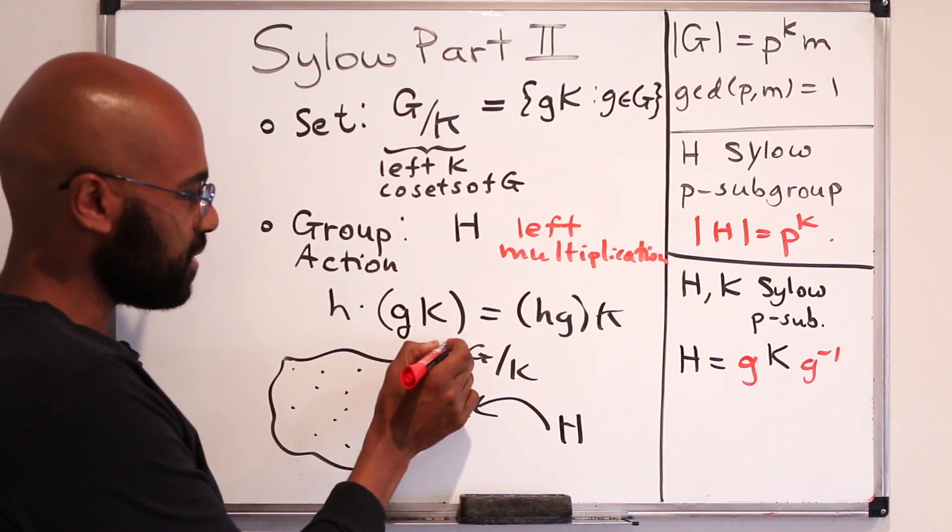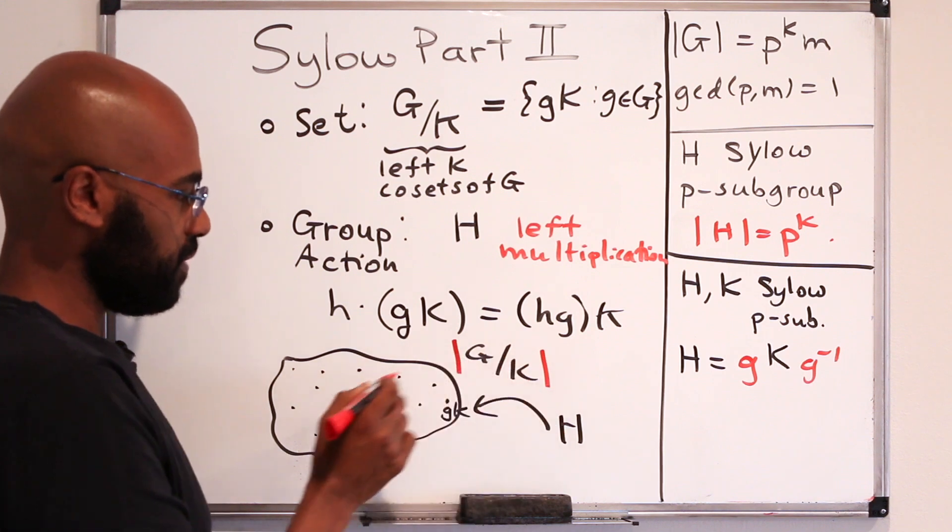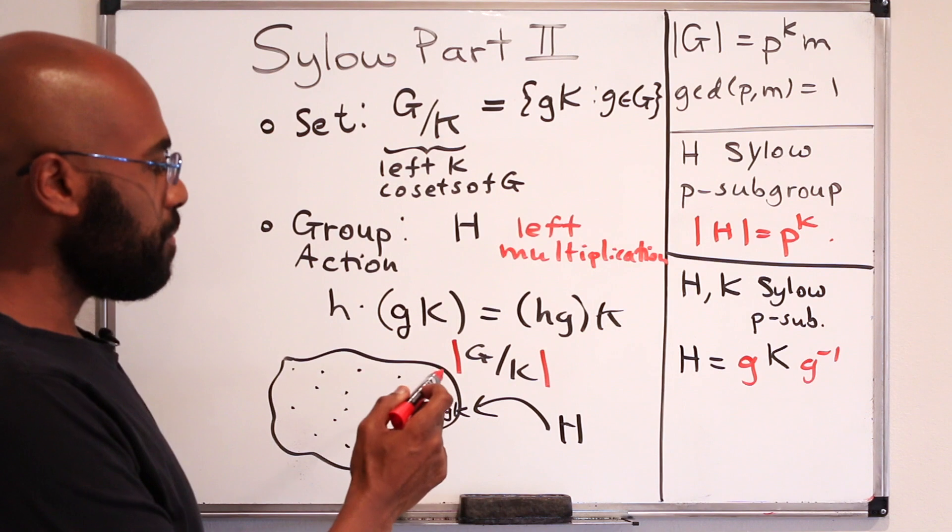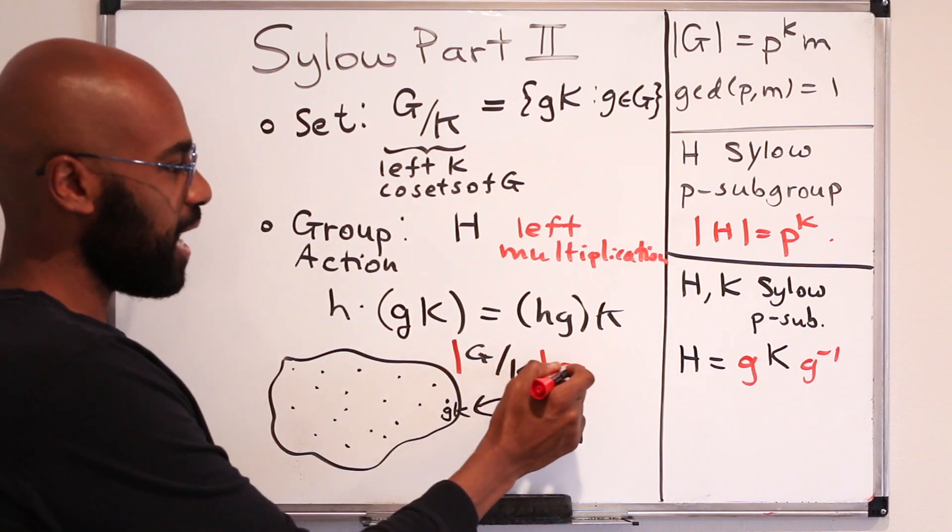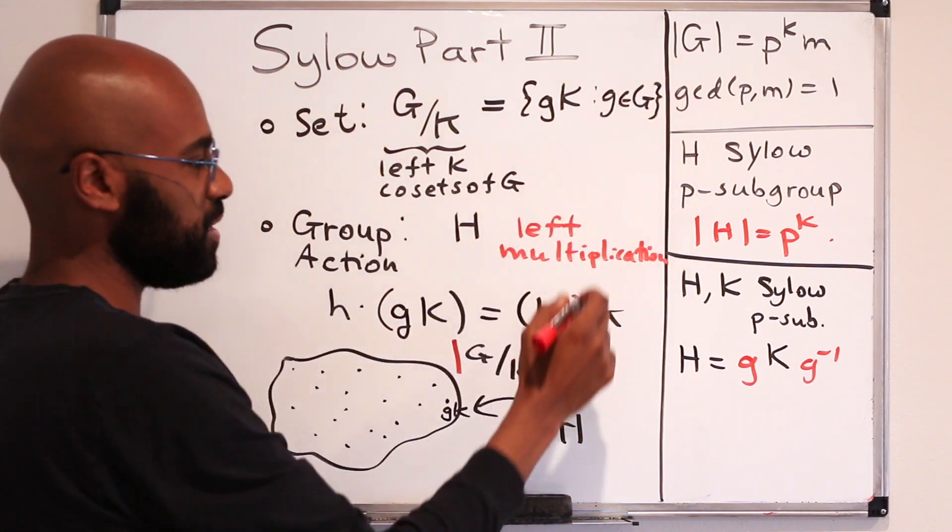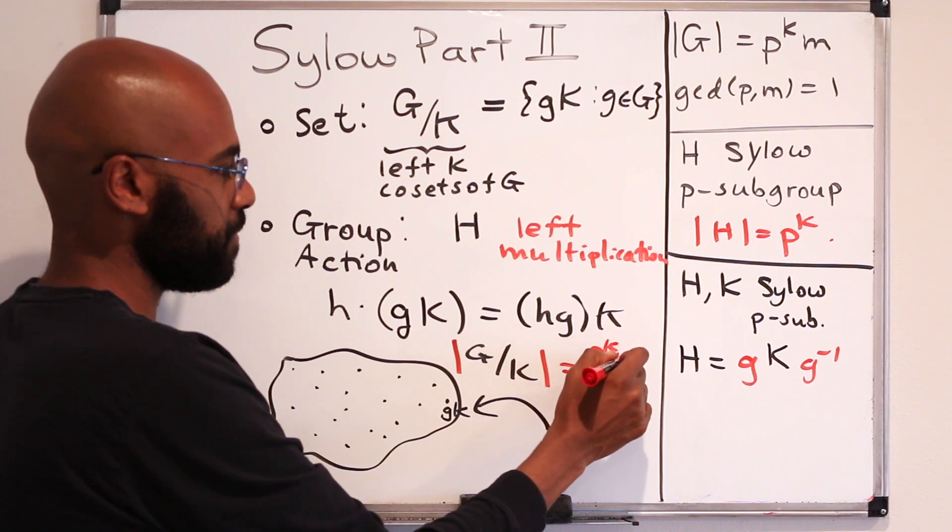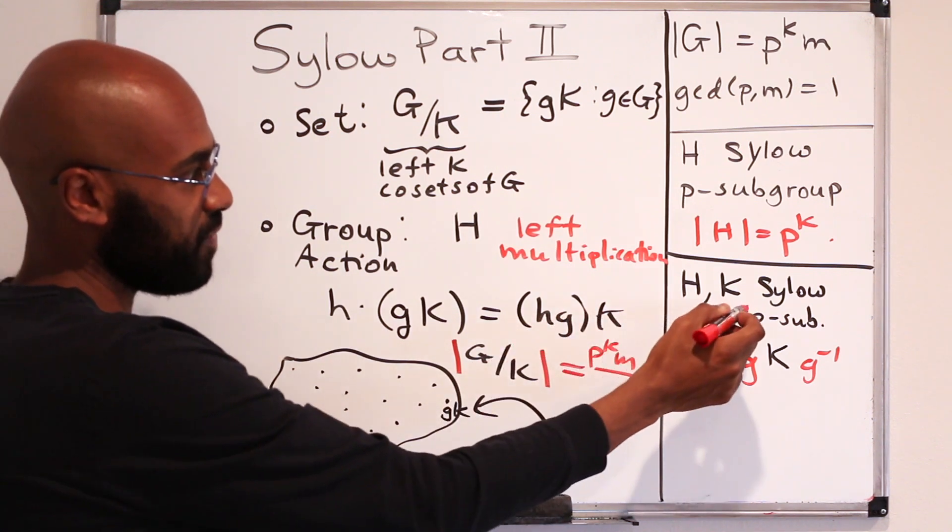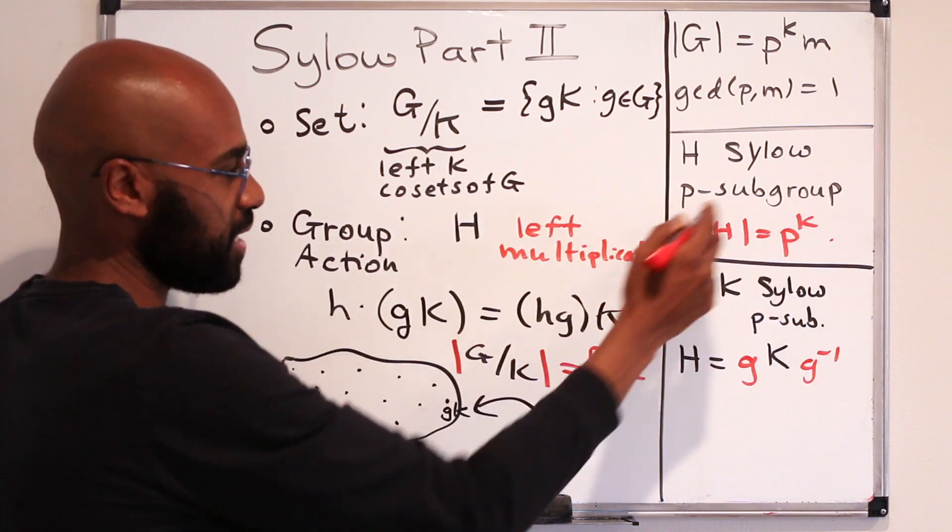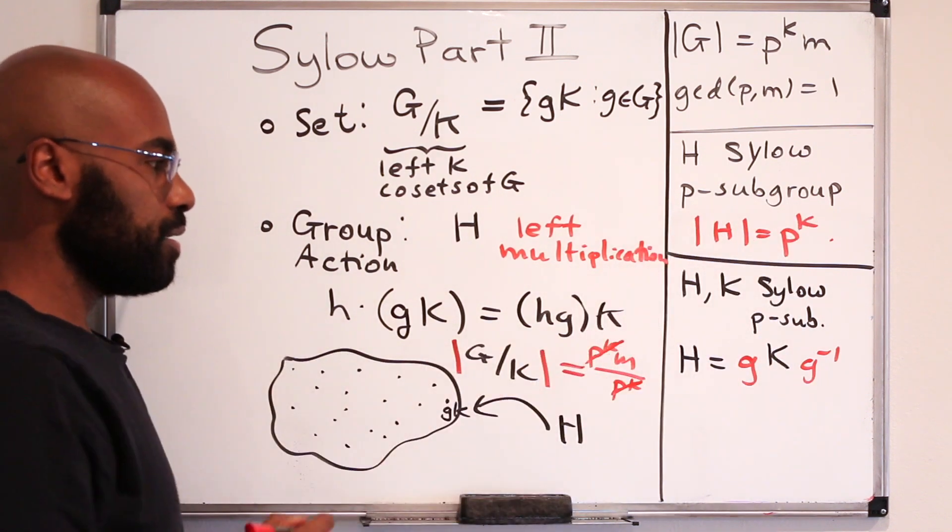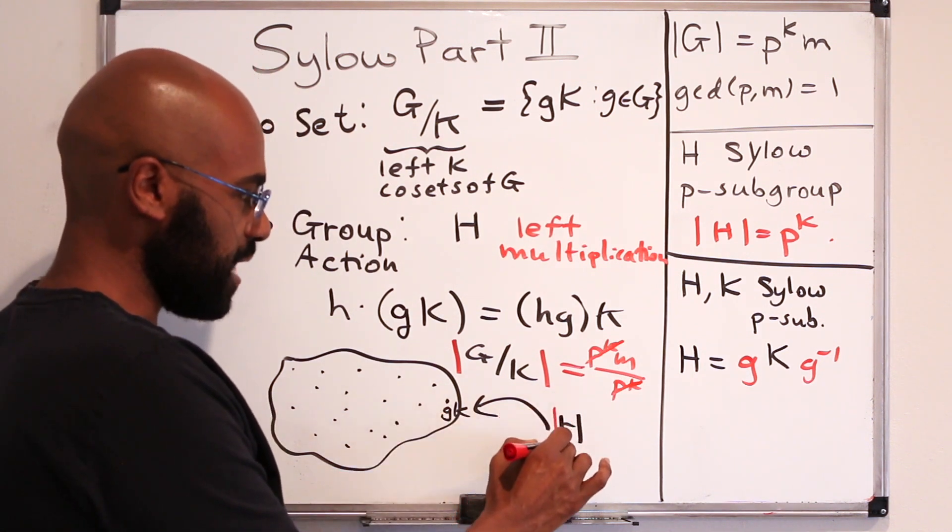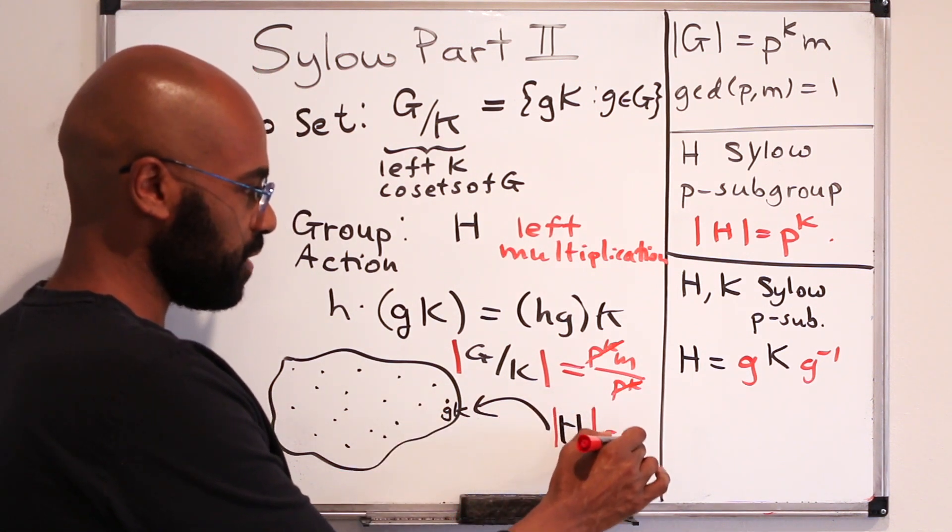Okay, so in that light, it would be good to know how the splitting actually happens. So first, let's make an observation about the size of this set here. How many left K cosets are there, period? Well, the number of left K cosets is the size of the group G, which is P to the K times M, divided by the size of the subgroup K. And K itself is a Sylow-P subgroup, so it has size P to the K. So the number of left K cosets is M. Now, the group that's doing the action is H, and that has size P to the K.